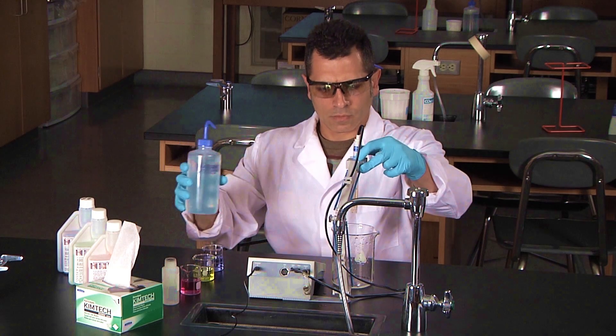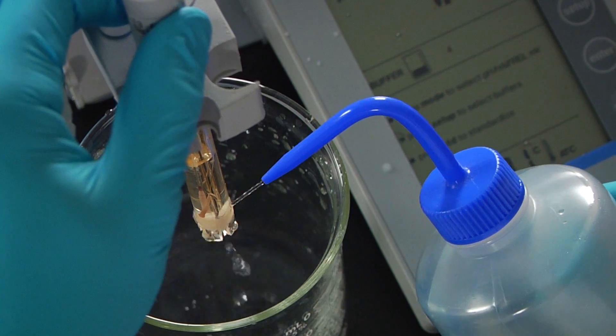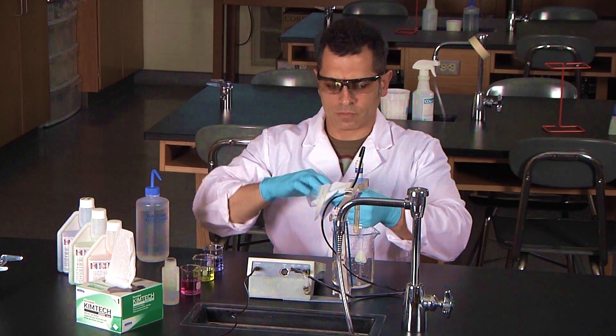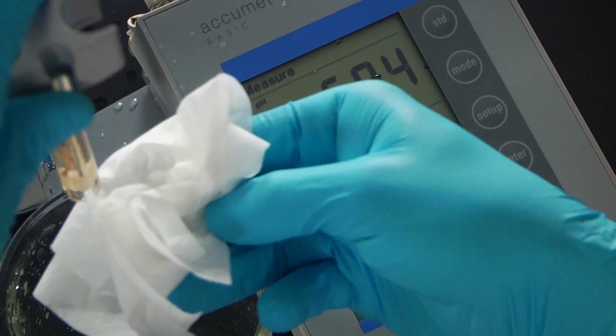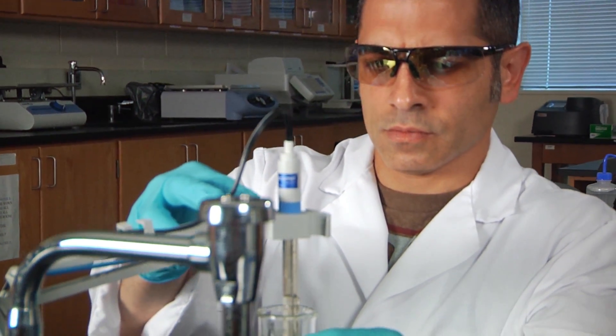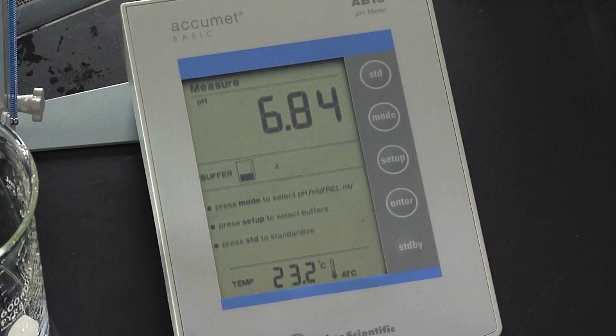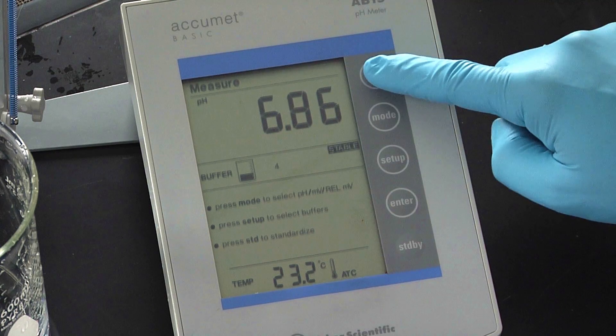Remove the probe and rinse it with the deionized water. Carefully blot the bottom of the glass bulb. Now place the probe into the 7.0 standard buffer solution. Press the standardized key.